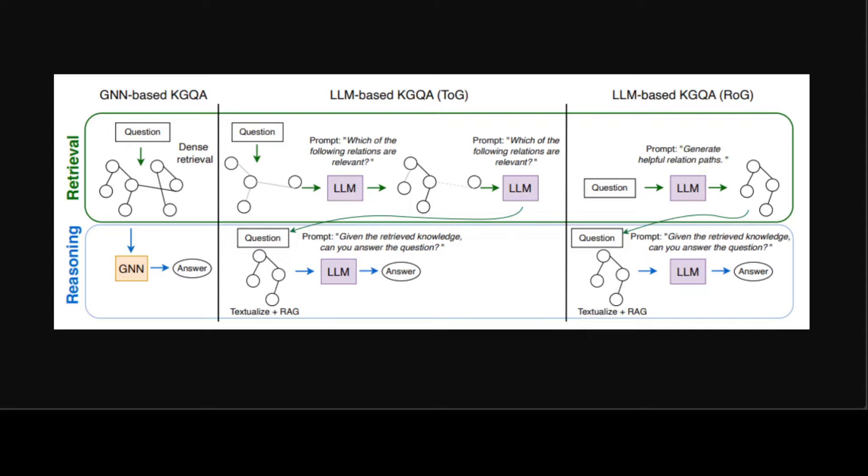In this GNN-RAG framework, the GNN acts as a dense subgraph reasoner to extract useful graph information, while the LLM leverages its natural language processing abilities for ultimate knowledge graph question answering or KGQA.